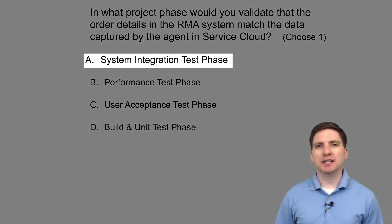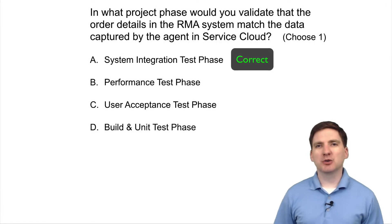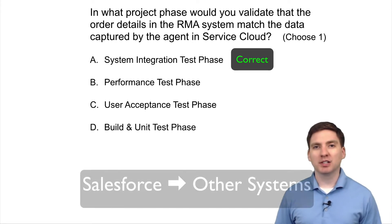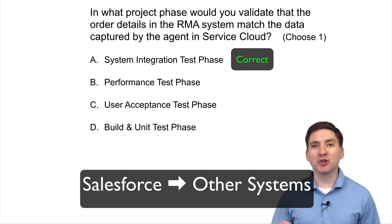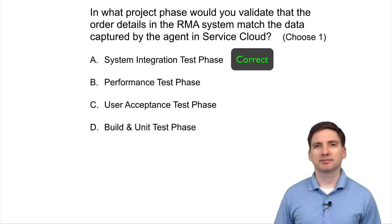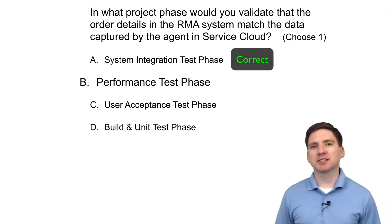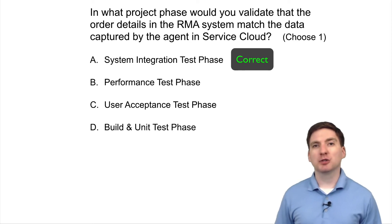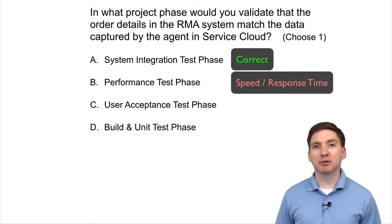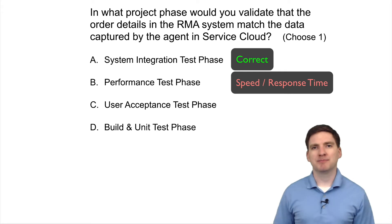The correct answer is A, system integration test phase. System integration testing is the phase where you typically would test that data is flowing correctly from Salesforce to other systems and from other systems back into Salesforce. Performance testing is when you would test that system transactions are taking the expected amount of time — so the focus would be on how long it takes for data to be reflected in different systems.